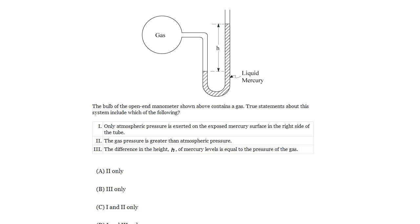The bulb of the open-end manometer shown above contains a gas. True statements about this system include which of the following? The gas pushes the mercury and displaces it, and this H is going to be important. We'll talk about what that means in a second.